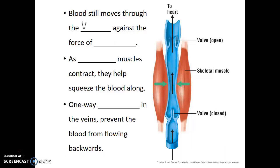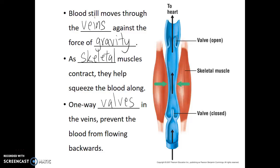Blood does still move through the veins against the force of gravity and low blood pressure, but it requires two specific mechanisms to do so. First, these veins are located near skeletal muscles. As those skeletal muscles contract, they apply pressure on the veins and squeeze them, pushing the blood forward. The reason why the blood is only pushed forward is because veins also have a series of one-way valves to prevent the blood from flowing backwards. As that skeletal muscle relaxes, the upper valve will close, the lower valve will open, and that region of the vein will be refilled with blood.